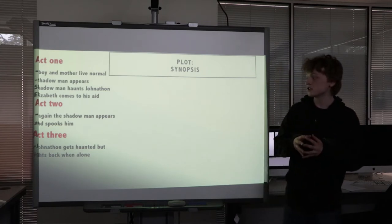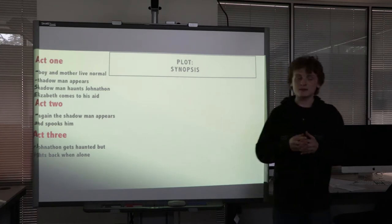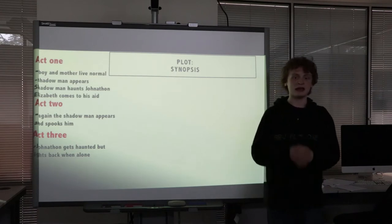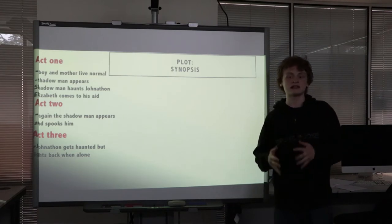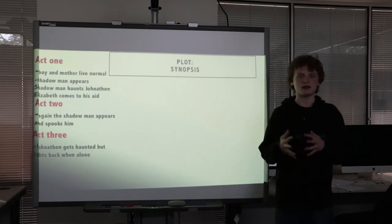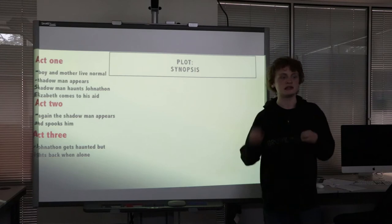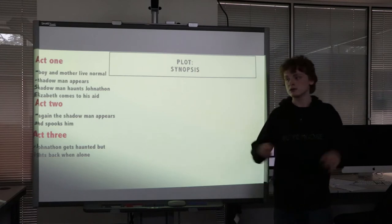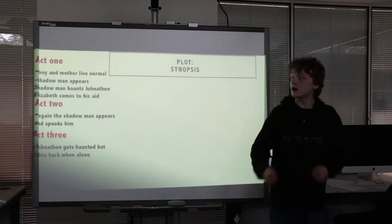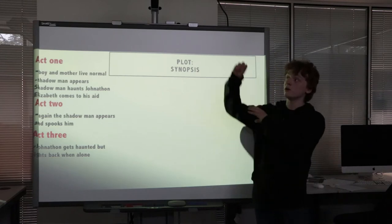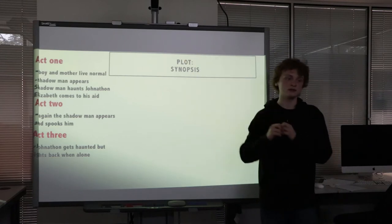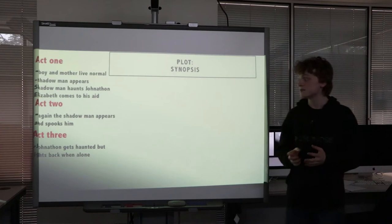Act 2: the shadow man appears once again and spooks Jonathan through a few frightening nights. It's classic horror tropes — jump scares, noises, sounds. Lights flickering off, lamps going out, lights flickering. Traditional horror devices.